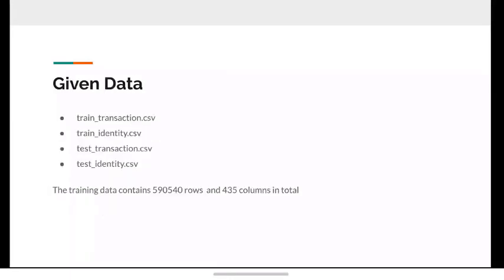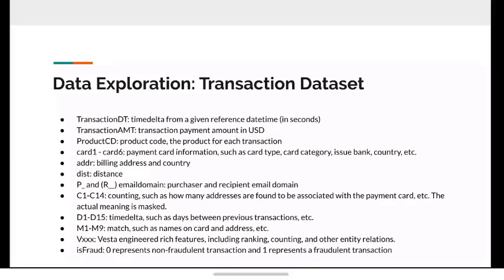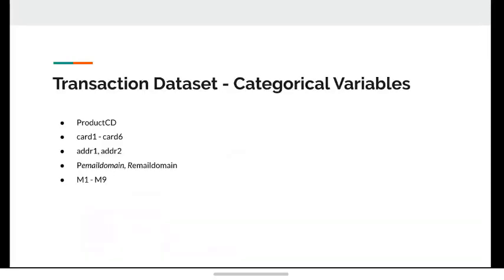The given data consists of four parts — two for training and two for testing. The training data is split into transactions and identity, and consists of many rows and columns. For data exploration, we will take a look at the transaction dataset first. It consists of information regarding the transactions, where zero represents a non-fraudulent transaction and one represents a fraudulent transaction. The training dataset also consists of categorical variables that need to be dealt with separately so that the model can interpret them correctly.